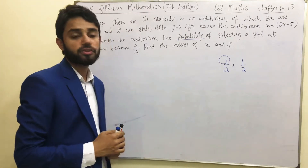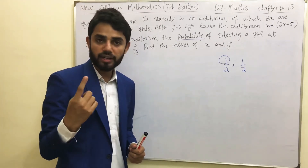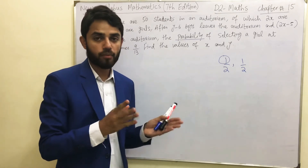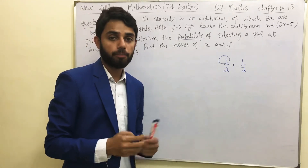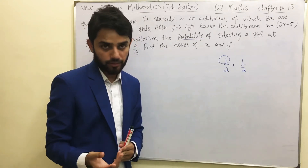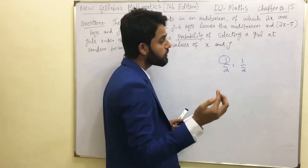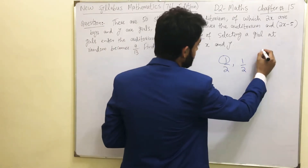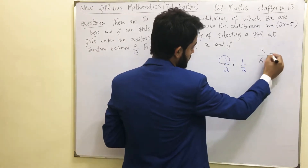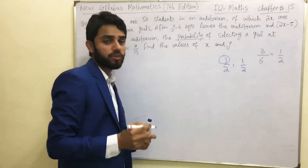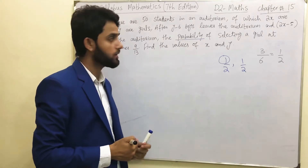Now one more example using a dice. Suppose you are rolling a dice — it has numbers 1, 2, 3, 4, 5, 6. If we want to find the probability of getting an even number, the even numbers are 2, 4, 6 — that's 3 favorable outcomes out of 6 total. So 3 over 6, simplified, becomes 1 over 2. Always write fractions in their lowest form.